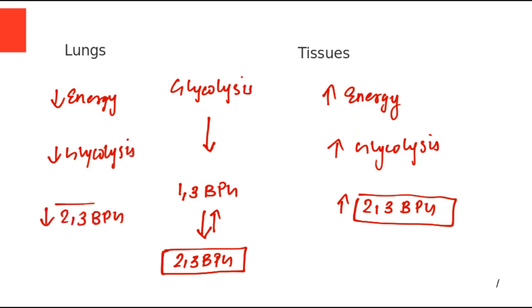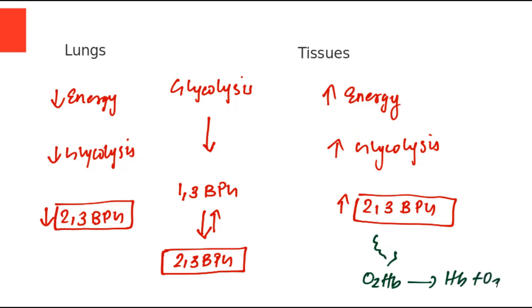Whenever there is a high amount of 2,3-BPG, it causes dissociation of oxyhemoglobin into hemoglobin and O₂. Whereas low 2,3-BPG favors the association of oxygen and hemoglobin to form oxyhemoglobin.